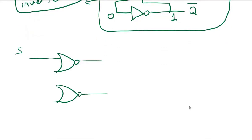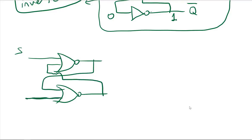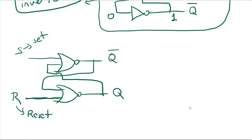Because the inverters cannot have two inputs, I will be using this cross-coupled idea, but now I have two other inputs. One is called S and the other one is R. S means it is set, R means it is reset. I am trying to reset my circuit using this R signal, and set my circuit using this S signal. I will call this Q-NOT, and I will call this output Q.